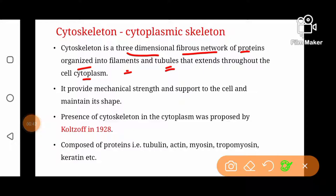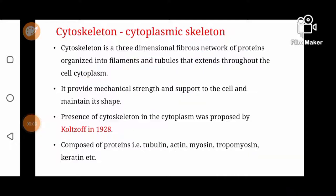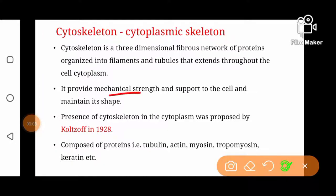Cytoskeleton provides mechanical strength and support to the cell and maintains its shape. It is especially well developed in animal cells. The presence of cytoskeleton in cytoplasm was proposed for the first time by Coles in 1928.